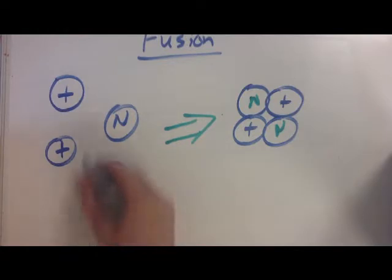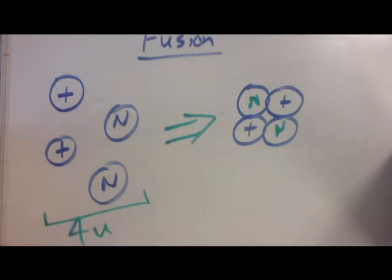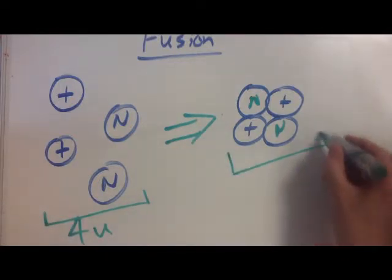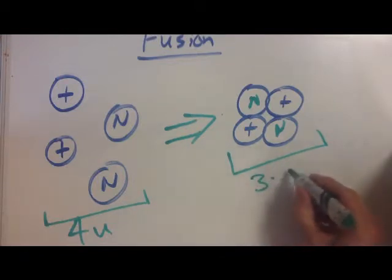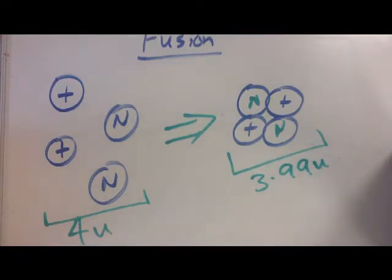The mass of these four objects over here - the total mass when they're separated is 4u. However, over here they're not 4u. When you use the unified mass constant, they're around about - and this isn't exact - but around 3.99u. They've lost mass.